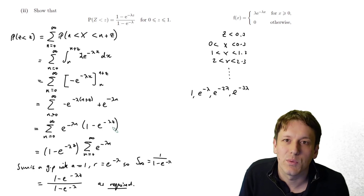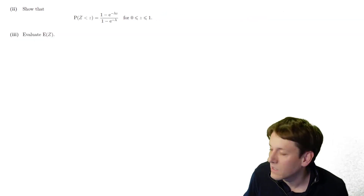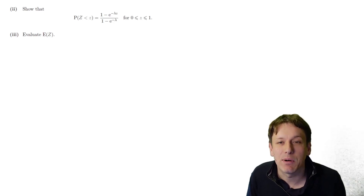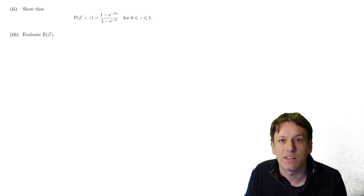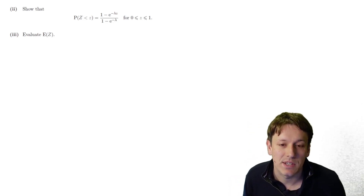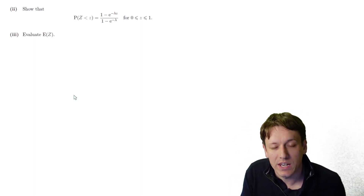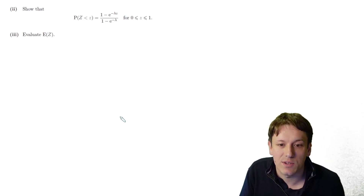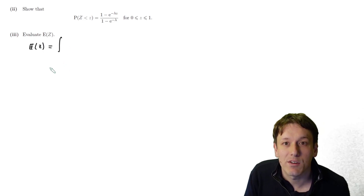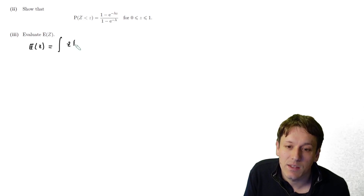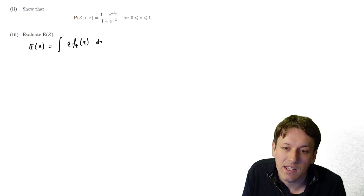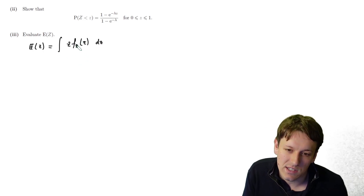In STEP questions with 'show that' parts, you can attempt later parts even if you haven't managed earlier ones, because the key results are given to you. Part three uses the answer from part two to evaluate E(Z). For a continuous random variable, E(Z) = integral of z times f_Z(z) dz, integrated over all possible values of z, which is 0 to 1.